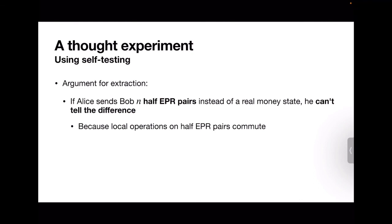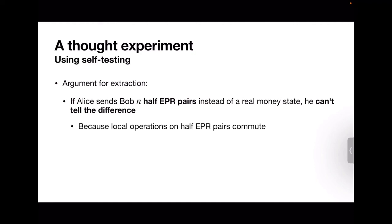The argument for extraction proceeds as follows. First, the thought experiment and the real protocol are indistinguishable to Bob, because local operations on EPR pairs commute — so we can commute Alice's measurement past Bob's, making the two protocols equivalent. Second, by the Natarajan-Vidick theorem, if Bob passes in the thought experiment world, there exists a local isometry φ_B on his side such that φ_B recovers the EPR pairs from the initial joint state, regardless of what Bob did to his side.